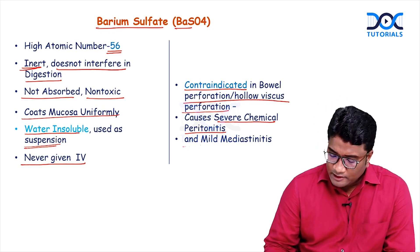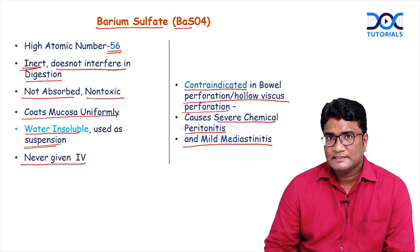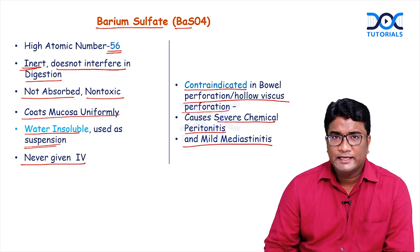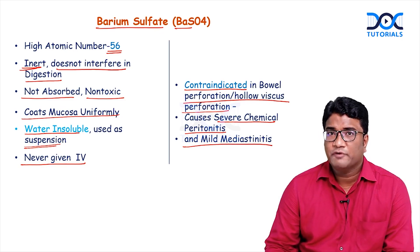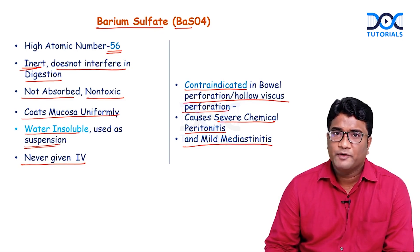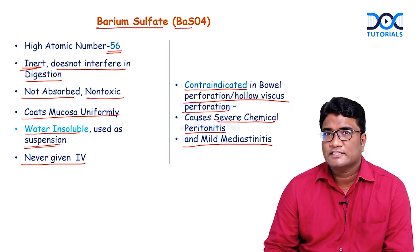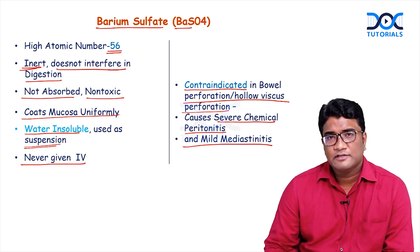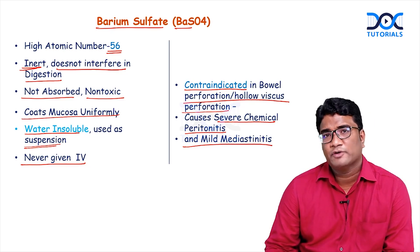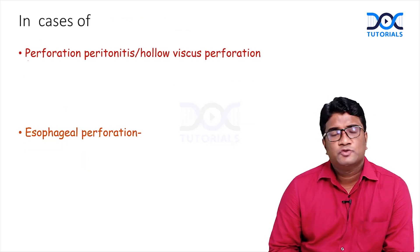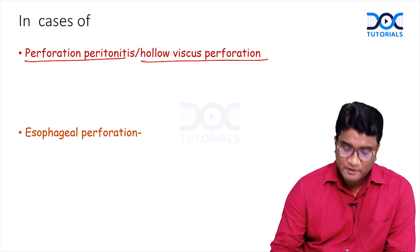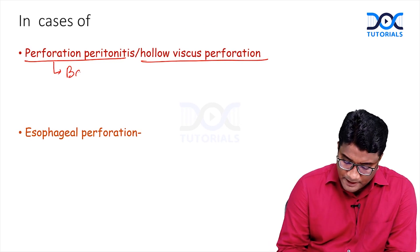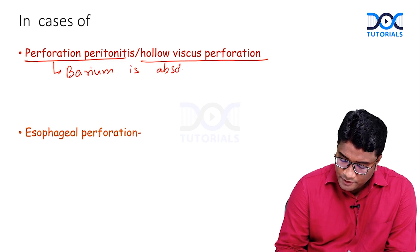Barium can also cause mild mediastinitis, so avoid it in esophageal perforation as well. Only if necessary, it can be used in a very dilute form in esophageal perforation, but generally avoid it in bowel perforations and esophageal perforations. Barium is an absolute contraindication in perforation peritonitis or hollow viscus perforation.